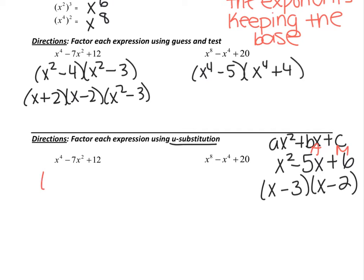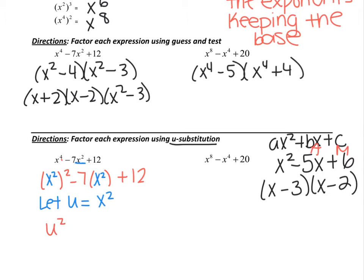The first thing you want to do is say: I need it to be something squared minus 7 times something plus 12. So look at x to the fourth — ask yourself, what do I have to square to get x to the fourth? The answer is x squared. And notice the middle term is x squared again, so that's the repeated piece. This blue stuff is going to be your substitution: let u equal x squared. Now rewrite the trinomial as u squared minus 7u plus 12.